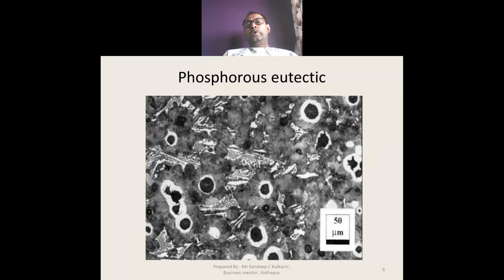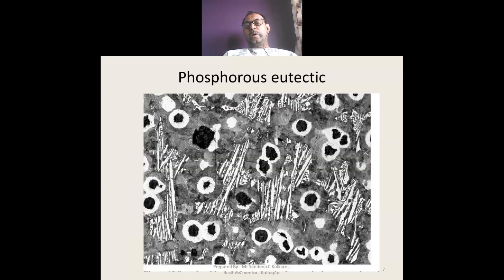These are some photos of the phosphorus eutectic seen in the microstructure of the casting, in both gray cast iron as well as ductile iron.